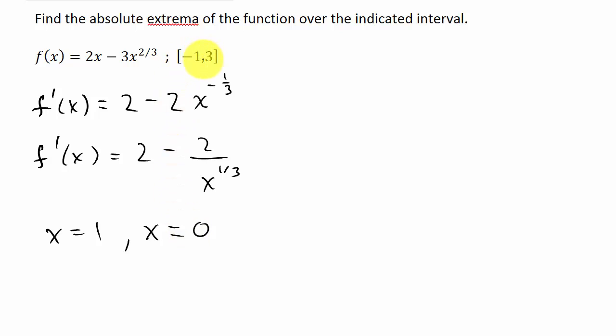Alright, so let's evaluate the critical numbers. f(0) is 2 times 0 minus 3 times 0 to the 2/3, that's going to give us 0. And then f(1) is 2 times 1 minus 3 times 1 to the 2/3. Well, 1 raised to anything is 1, so that's going to give us negative 1.